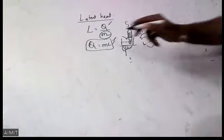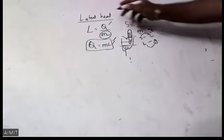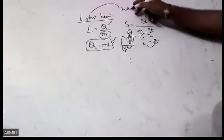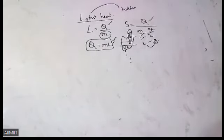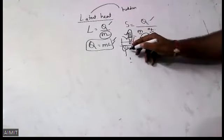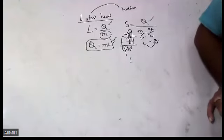That is called Latent Heat. Latent means hidden. What do you mean by latent? Latent means which is hiding. Who is hiding here? Temperature. Why is it hiding? Because it is not recorded in the thermometer. Even though you are supplying heat, it is not recorded in the thermometer. Why? All the heat which you are supplying is used in breaking the bonds.